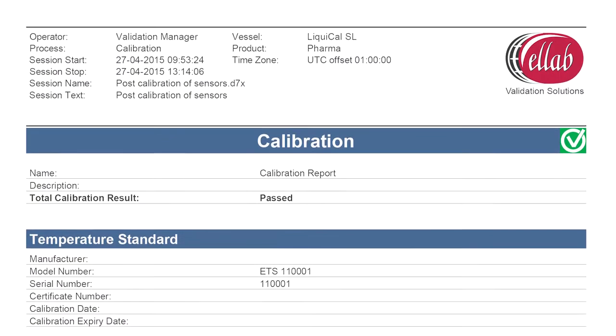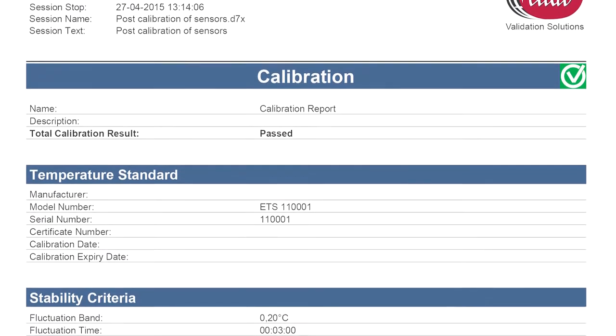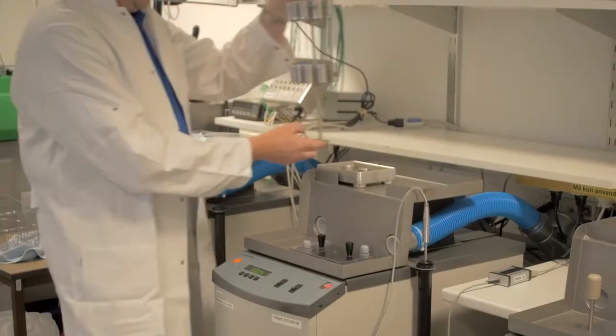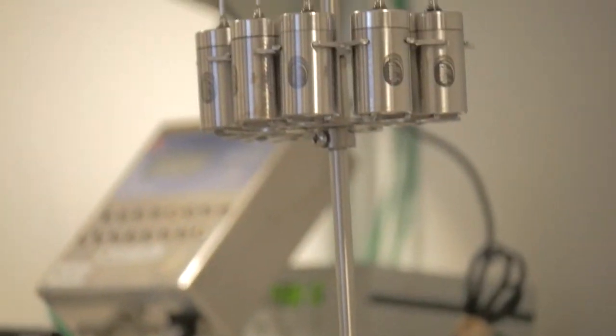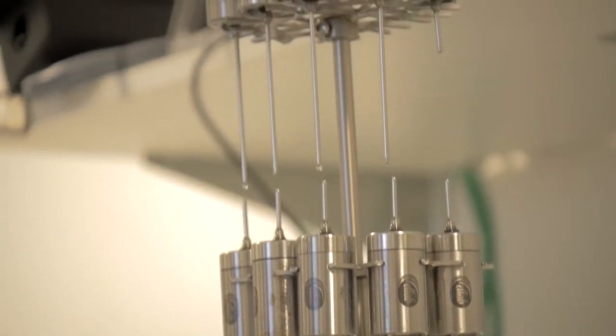Templates allow detailed test criteria to be preset to ensure accurate documentation and correct implementation of required procedures. Finally, offset values are generated and stored in the software database or hardware for later use.